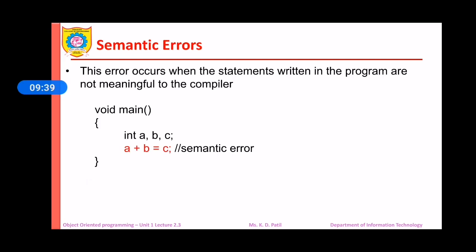The last type of errors are semantic errors. These errors occur when the statements written in the program are not meaningful to the compiler. For example, if we want to perform the addition of two numbers, the correct syntax is C = A + B, where the result is stored in C. But if we write A + B = C, it is wrong — it does not have any meaning, and hence it is considered a semantic error.